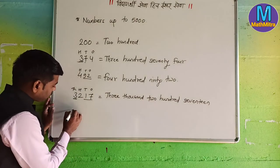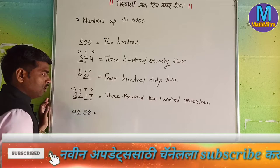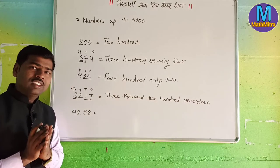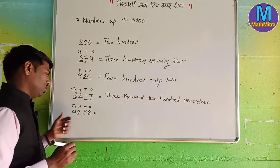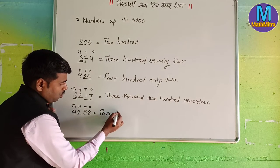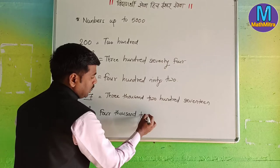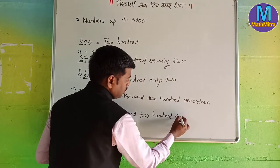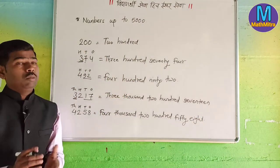The next number is 4, 2, 5, 8. What are we doing? Right. Places: ones, tens, hundreds, thousands. How many thousands? Four thousand. Then how much hundreds? Two hundred. And the remaining two digits: fifty-eight. So this number is 4258. Like this we can find and write the numbers.